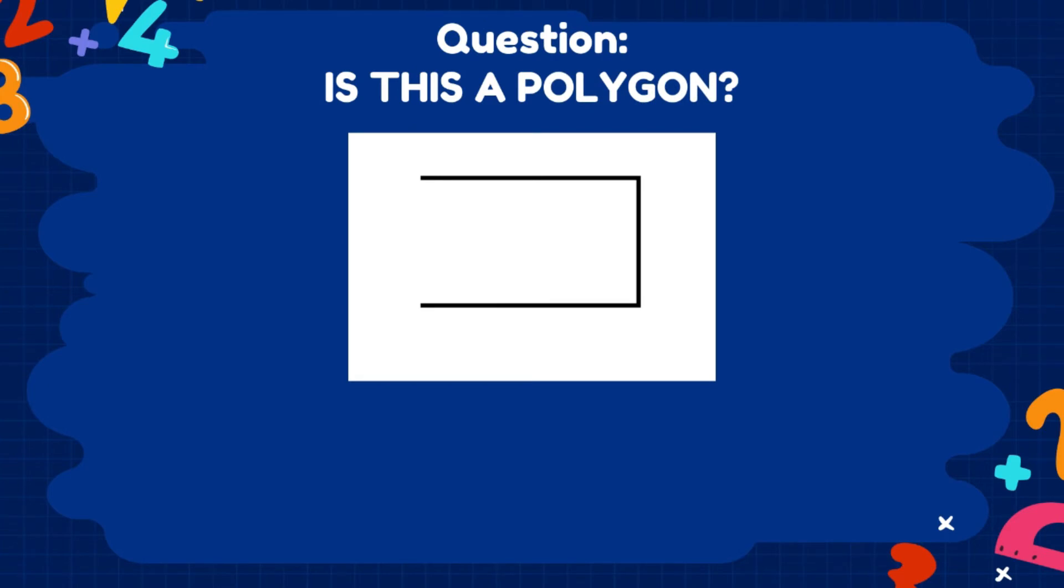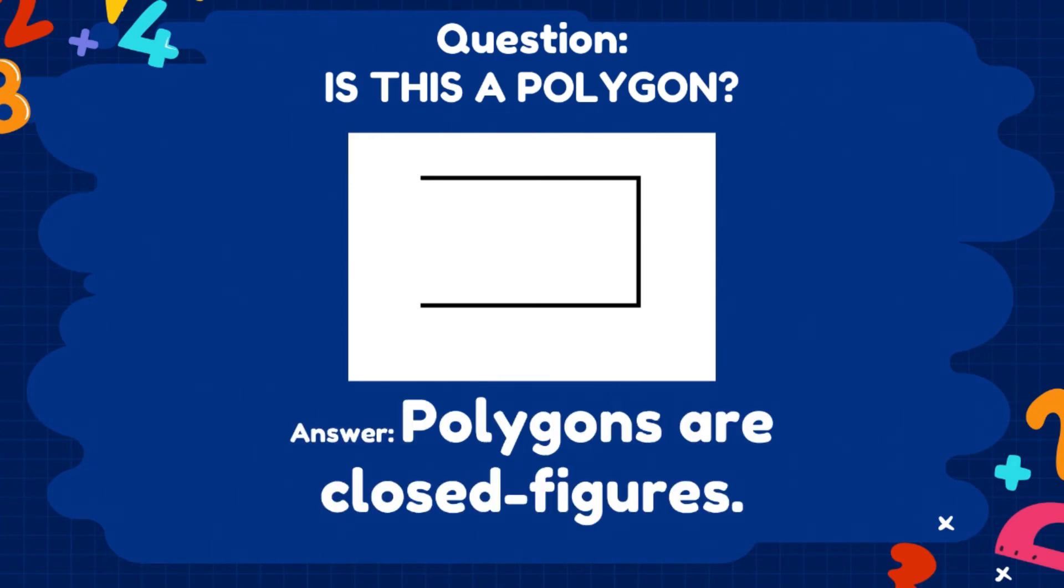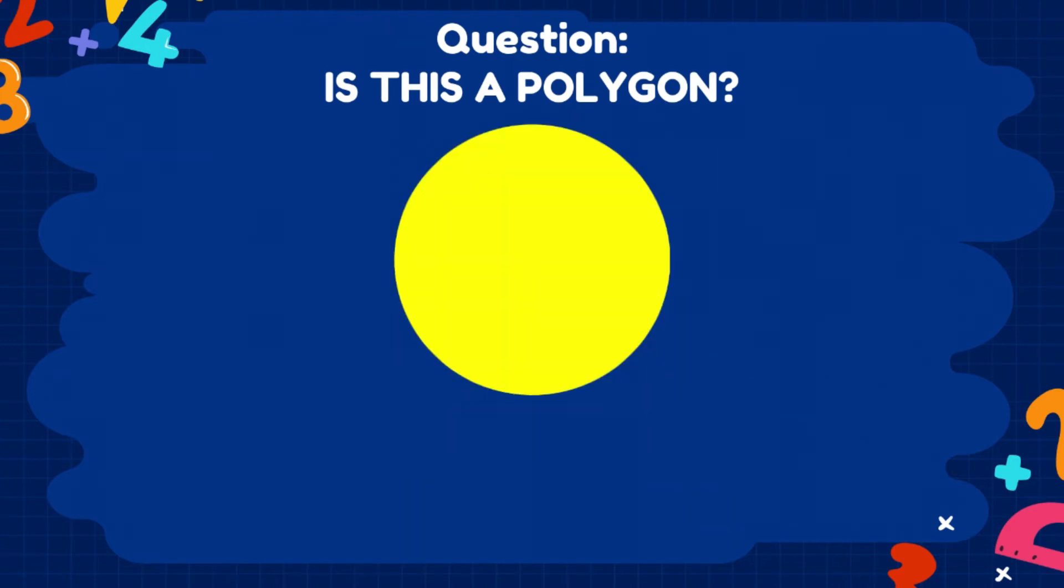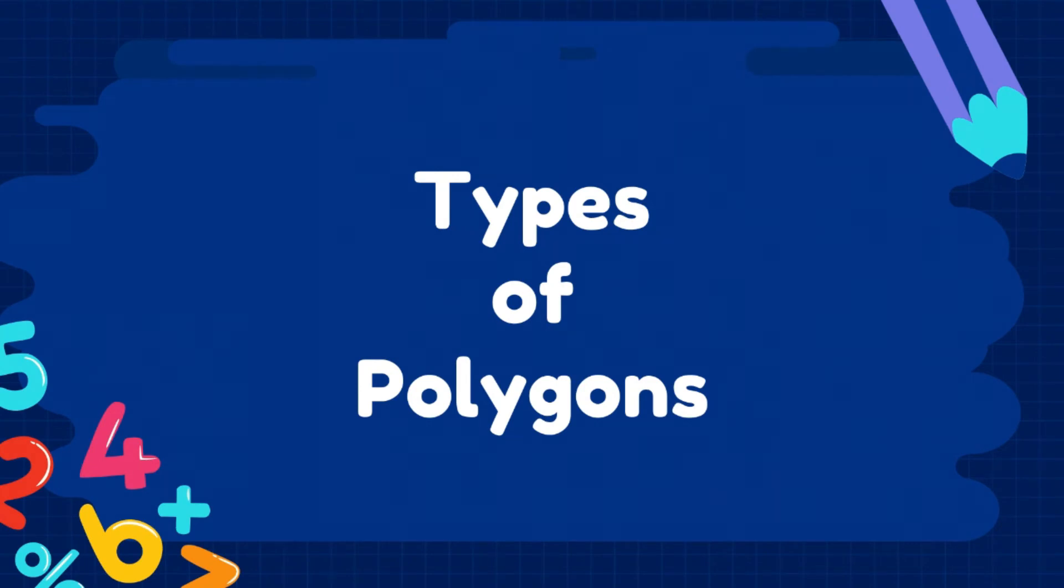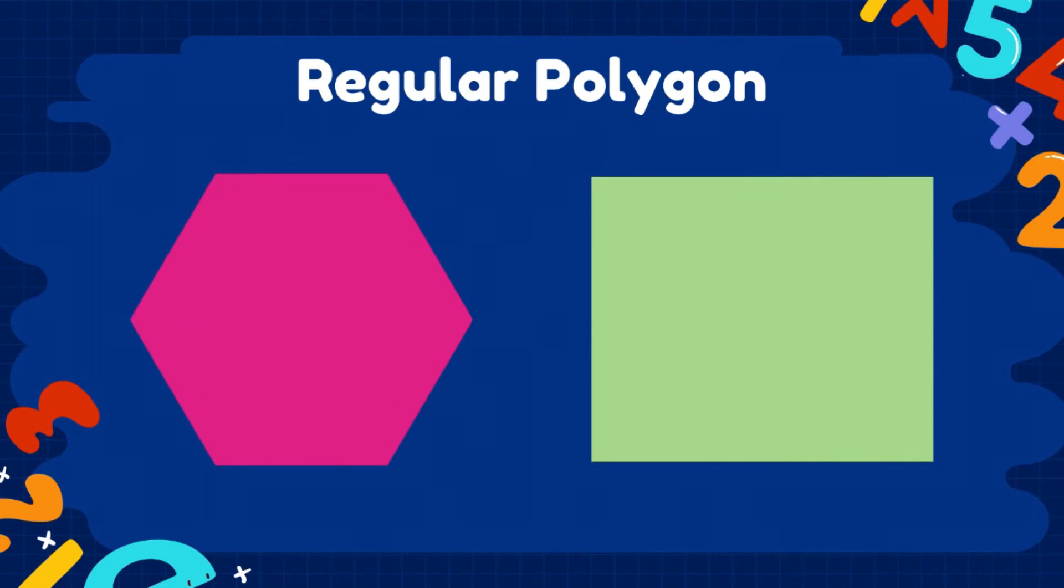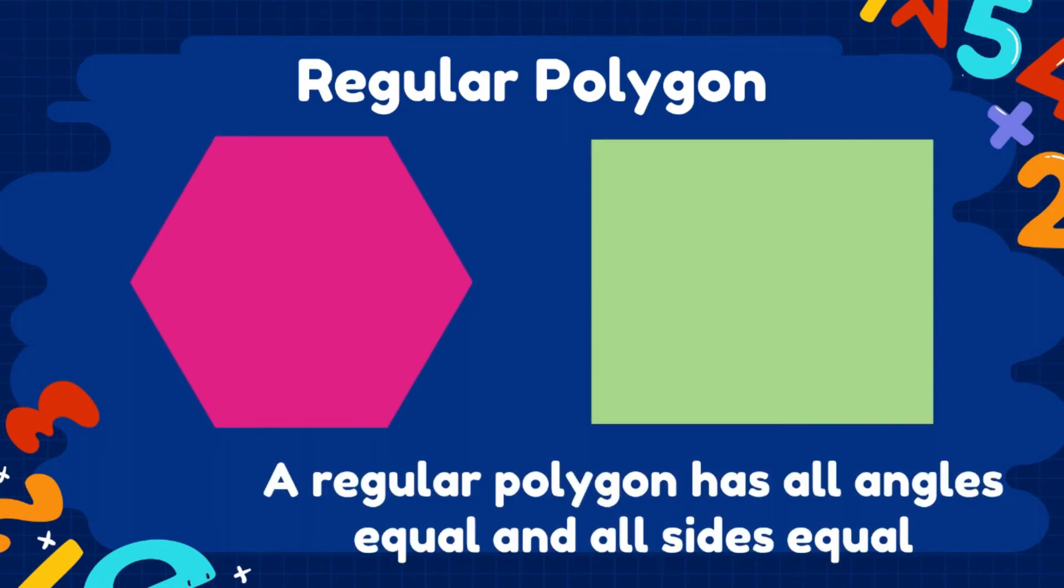Before we proceed, I have a question. Do you think this is a polygon? Yes or no? The answer here is no. But why? It is because polygons are closed figures. In this image we can see that there is an open space. How about this? Is this a polygon? The answer is no. Polygons are made of straight lines and this is clearly a circle.